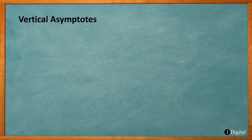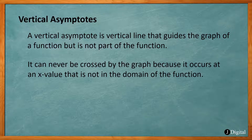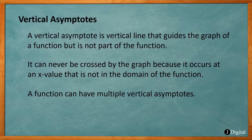So what is a vertical asymptote? A vertical asymptote is a vertical line that guides the graph of a function, but it's not part of the function. It can never be crossed by a graph because it occurs at an x value that is not in the domain of the function. A function can have multiple vertical asymptotes.